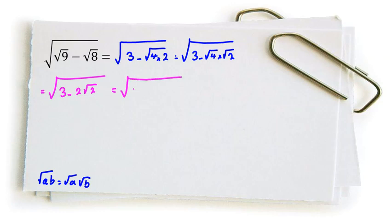And we know that 3 is 1 plus 2 minus 2 root 2. If we use the famous identity a minus b whole squared, we can write it twice, and if you multiply, it will be a squared plus b squared minus 2ab.